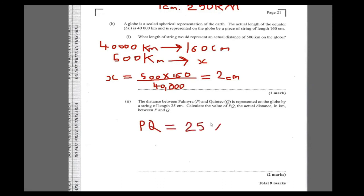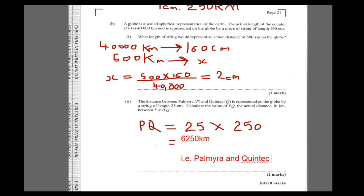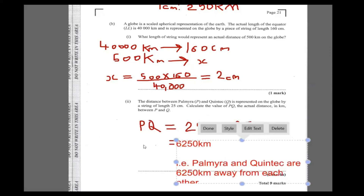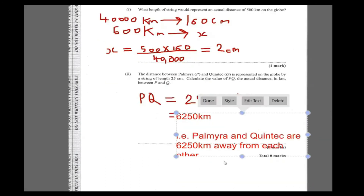Using the scale, the distance PQ = 25 × 250 = 6250 kilometers. So Palmeira and Quintic are 6250 kilometers away from each other. Nothing special about this question.